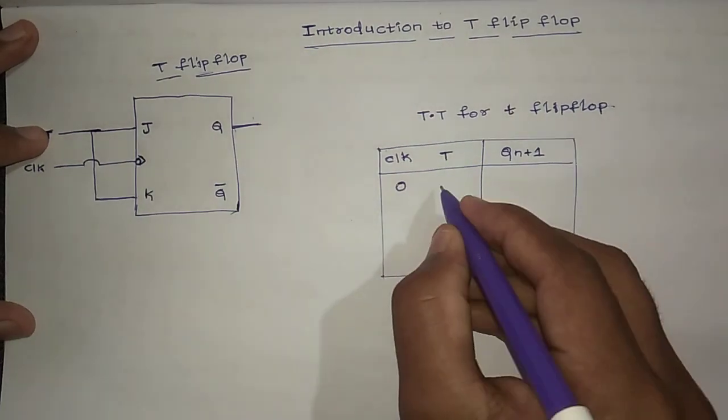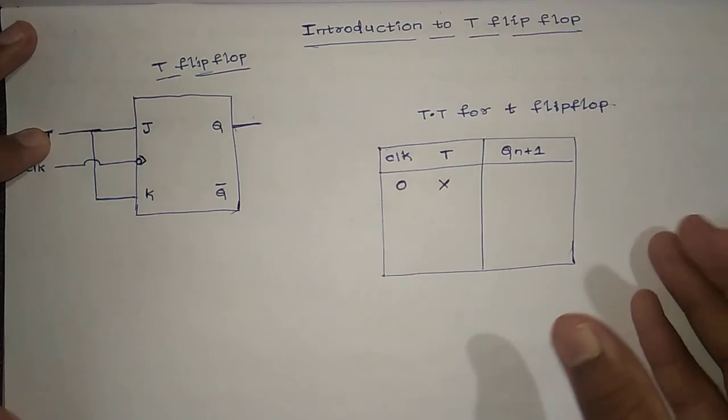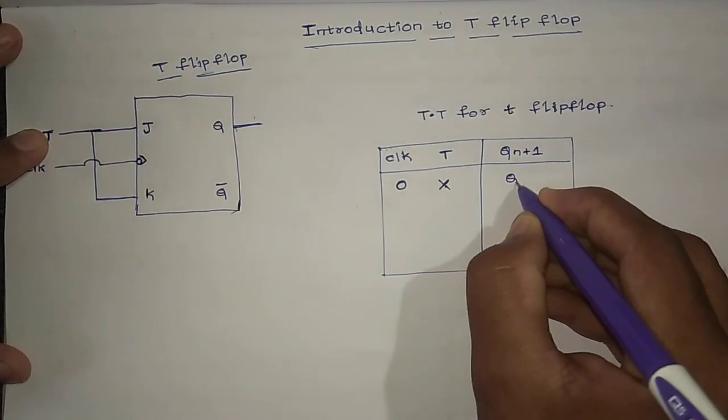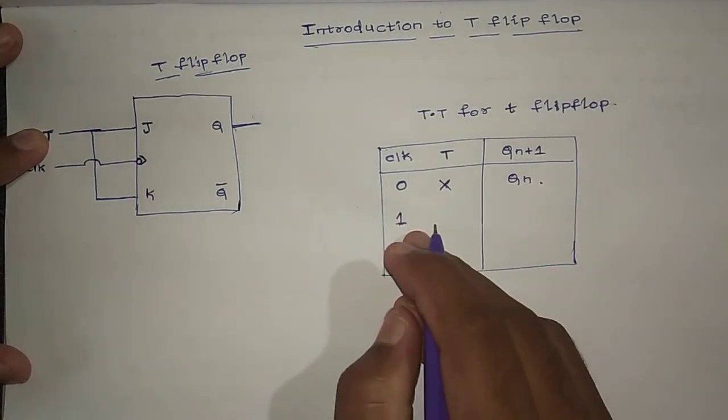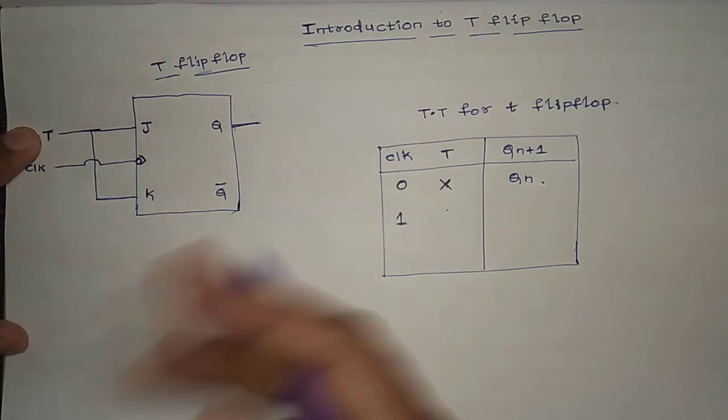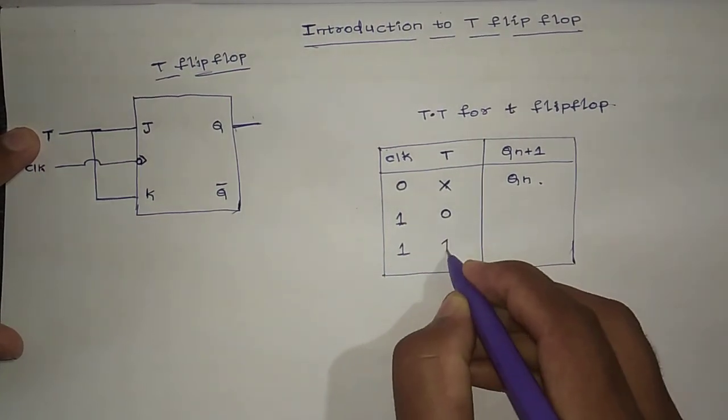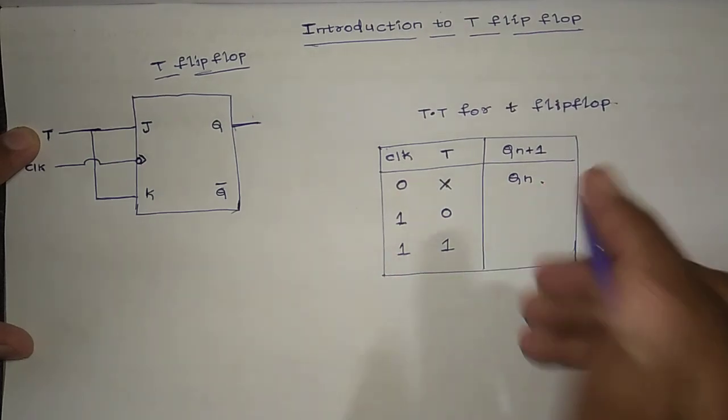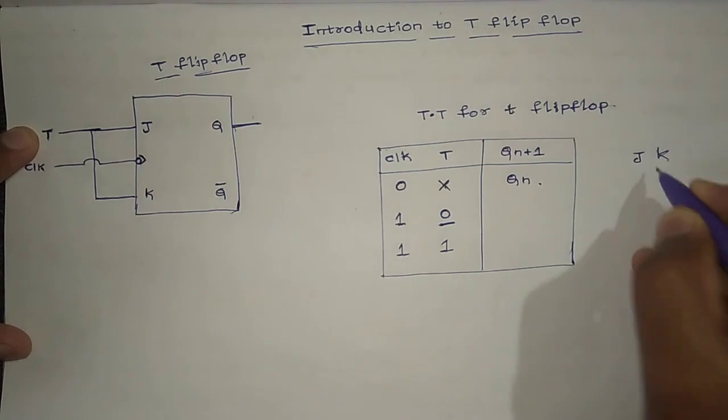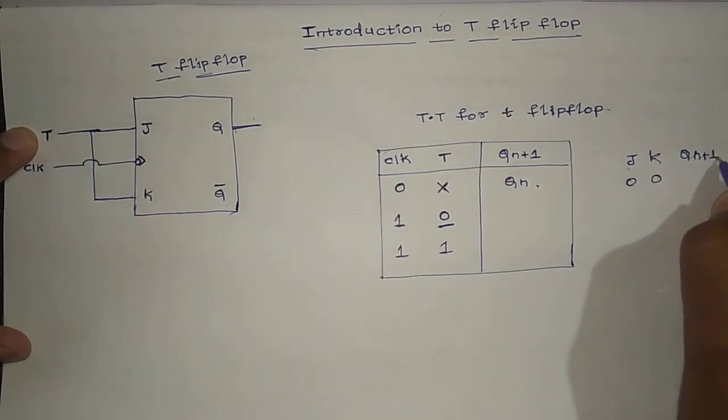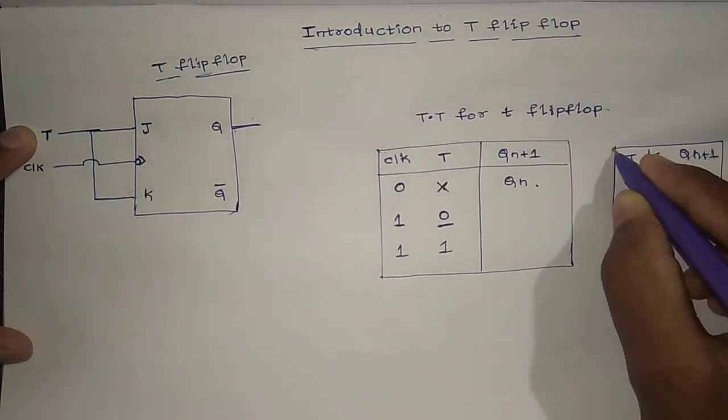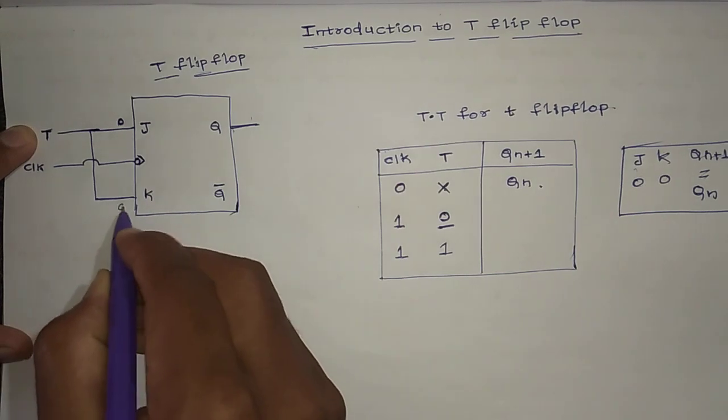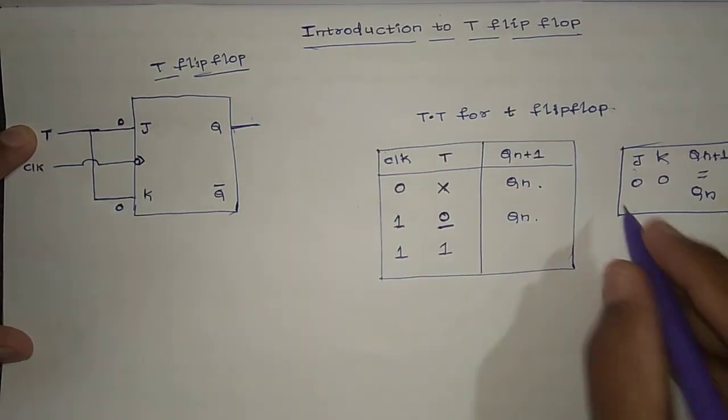We don't care whatever T is, it holds its previous state. So Qn+1 equals Qn. When clock is 1 and toggle, we can either give 0 or 1. When we give T as 0, this acts as memory again. We know in J-K flip-flop when J equals 0 and K equals 0, Qn+1 equals Qn. In T0 is the same, J0 and K0 are the same.